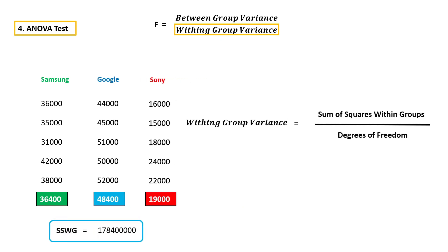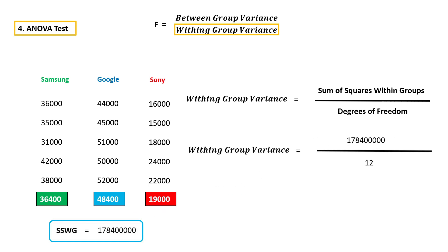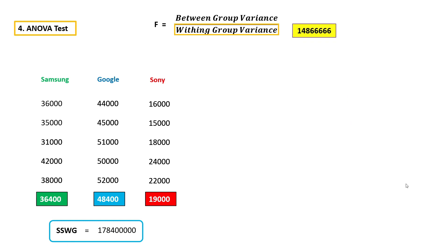We will get sum of squares within group. To calculate within group variance, we have to divide this value by its degrees of freedom. For within group variance, the degrees of freedom will be number of samples minus number of categories. Here, we have 15 samples and 3 categories, so the degrees of freedom will be 15 minus 3, which is 12. Now we have sum of squares within group as well as degrees of freedom, so we can simply calculate within group variance.